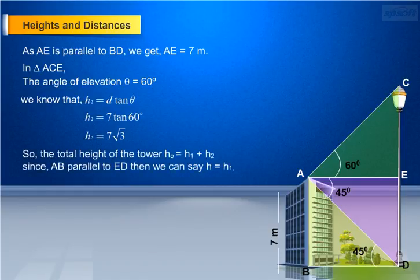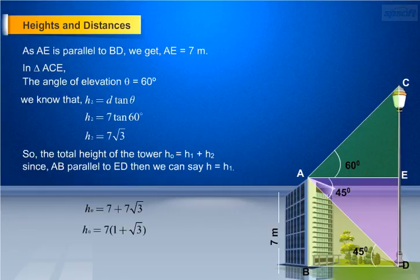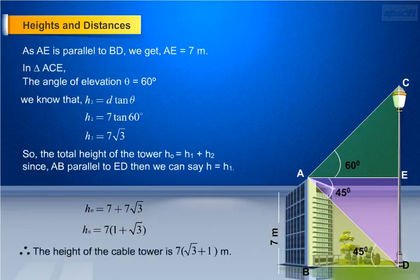So the total height of the tower H0 equals H1 plus H2. Since AB is parallel to ED, we can say H equals H1. That is, H0 equals 7 plus 7 root 3. Taking 7 as common, H0 equals 7 into (1 plus root 3). Therefore, the height of the cable tower is 7(root 3 + 1) meters.